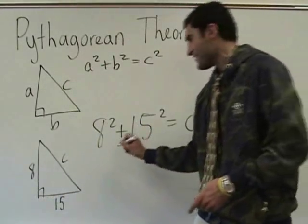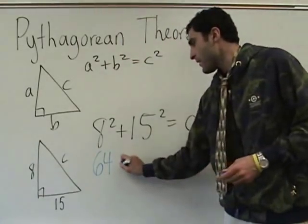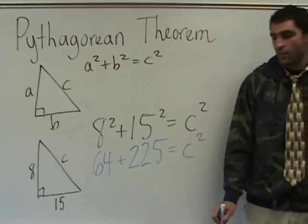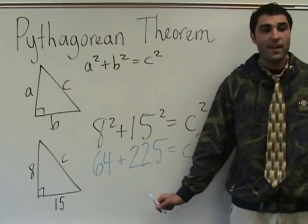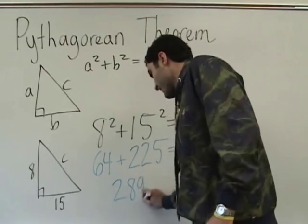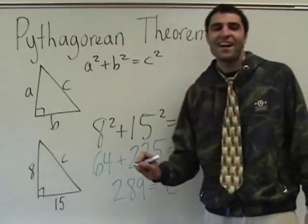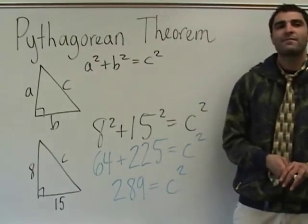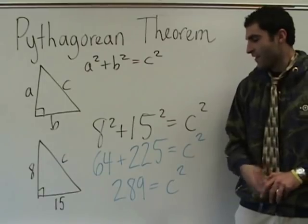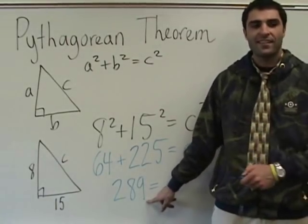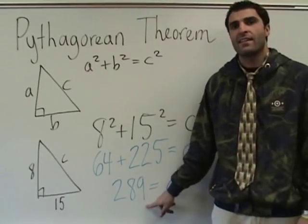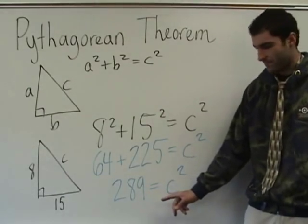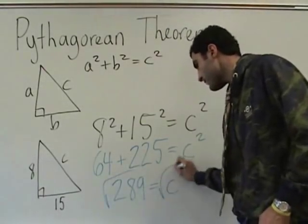So you said this was 64? Yes. 225? Nice. It's always 289. So 64 plus 225 equals 289. What times what is 289? I'm telling you it's a perfect square. 7 times 7 is 49, so it ends in 9. So it can't be 16 and it can't be 18, because those don't end in 9 when you square them. 17. So take the square root of both sides, and C equals 17.